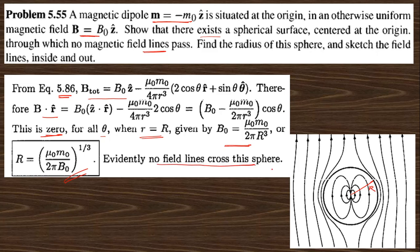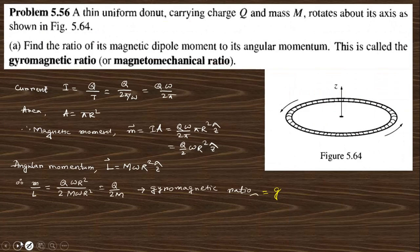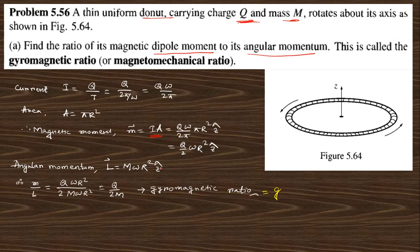Question 5.55: a uniform thin disk carrying charge q and mass m rotates about its axis. Find the ratio of the magnetic dipole moment to the angular momentum. The magnetic dipole moment is current times area; current is q/T = q*omega/(2*pi), so the dipole moment is q*omega*R²/2 in the z-cap direction. The angular momentum term is m*omega*R² z-cap. Therefore, the ratio m/L equals q/(2m), which is known as the gyromagnetic ratio.